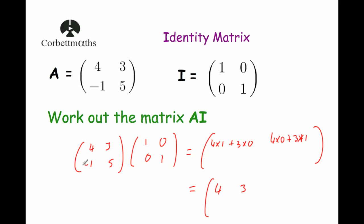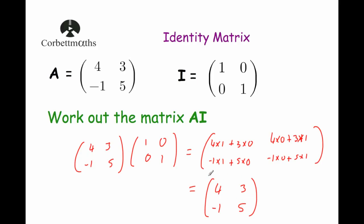Next we move on to the second row times the first column: minus 1 times 1 plus 5 times 0. Minus 1 times 1 is minus 1, and 5 times 0 is 0, so that gives minus 1. And finally the second row times the second column: minus 1 times 0 plus 5 times 1. Minus 1 times 0 is 0, and 5 times 1 is 5, so that gives 5. So when we multiply A = [[4, 3], [-1, 5]] by the identity matrix [[1, 0], [0, 1]], we get [[4, 3], [-1, 5]].